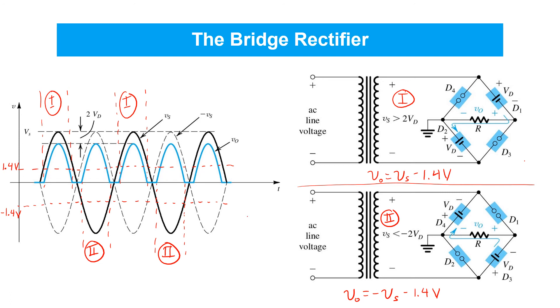And then, in between, we've got these periods of time, which we've called case three, where all the diodes are off and VO is, therefore, zero.